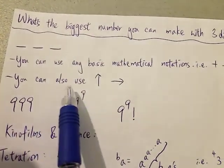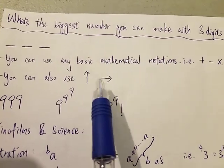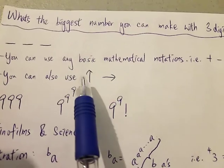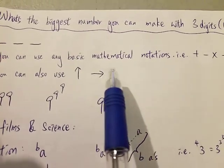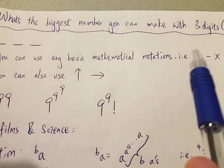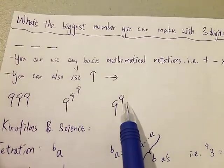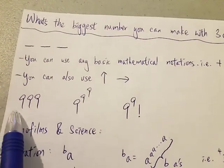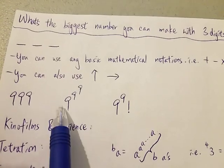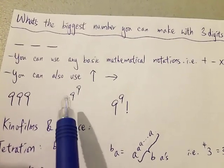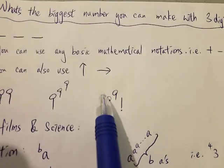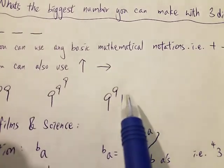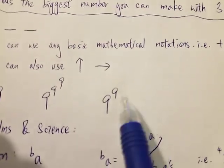I said you can even use something like Knuth's up arrow notation or even Conway's chain arrow notation. But it turns out that in order to use these two notations we need a minimum of four digits to make it bigger than these two. So the answer for the last video is obviously not 999, and to everyone's surprise it's also not 9 to the 9 to the 9. It turns out that the correct answer was 9 to the 9 factorial — if you want to understand why, please check out that video.